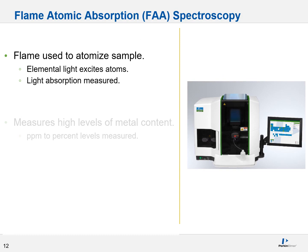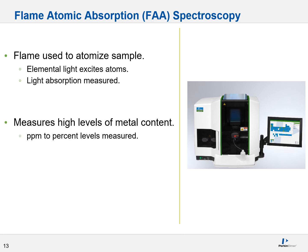In flame atomic absorption spectroscopy, or FAA, a flame at about 2,500 degrees Celsius is used to atomize your sample. The atomized samples are irradiated with element-specific light, and the amount of light absorbed is used to back-calculate what and how much of your particular metal you have. This technique is used to measure high levels of metal content, usually from the ppm to percent levels.